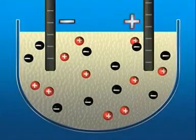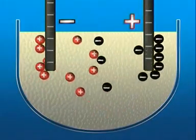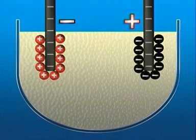Once the power supply is switched on, the lead ions are attracted to the negative electrode. The bromide ions are attracted to the positive electrode.